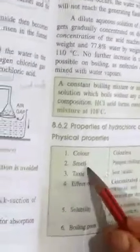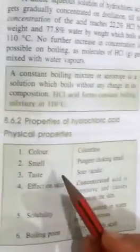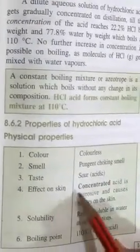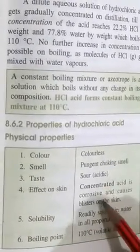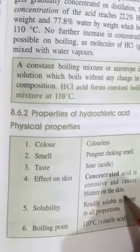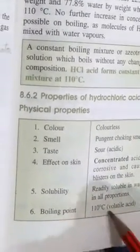Now, properties of hydrochloric acid. Physical properties: colorless, pungent choking smell, concentrated acid is corrosive and causes blisters on skin, readily soluble in water, boiling point 110°C, volatile in nature - vaporizes fast.